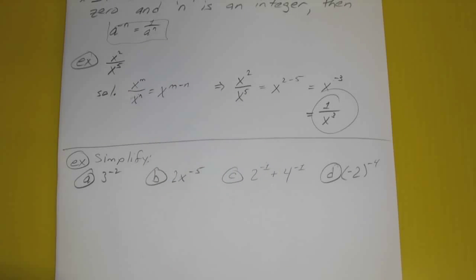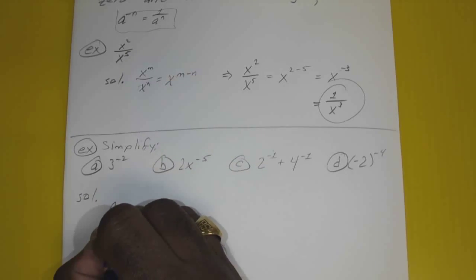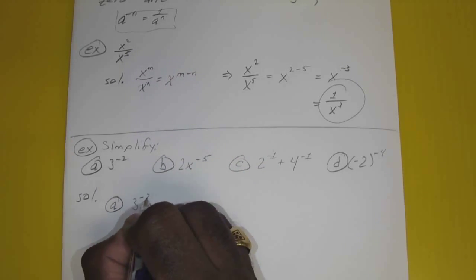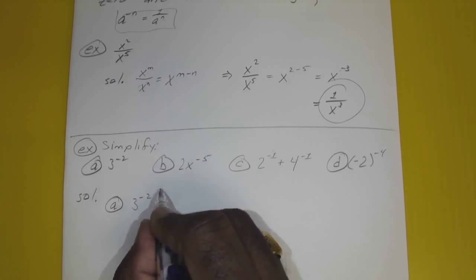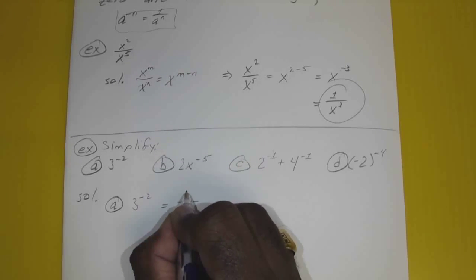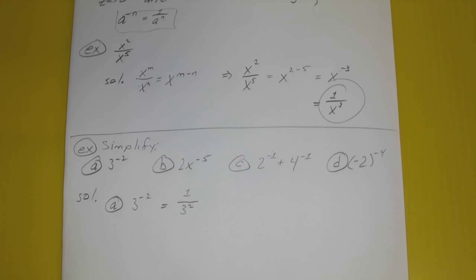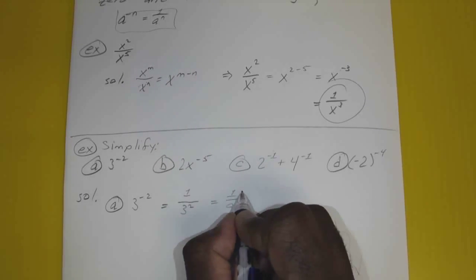For problem A, 3 to the negative 2 power: we have a negative exponent in the numerator, so we pull it down to the denominator and make it positive. That gives us 1 over 3 squared, which is 1 over 9.